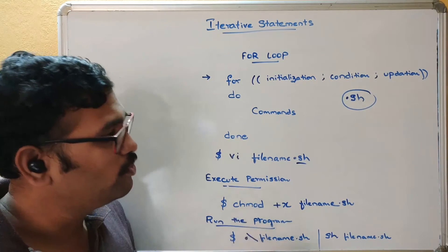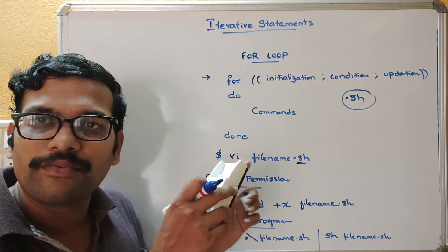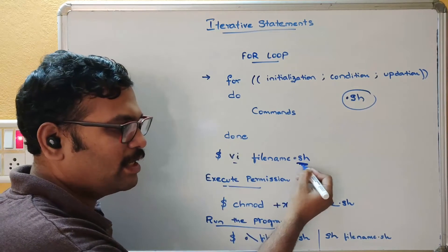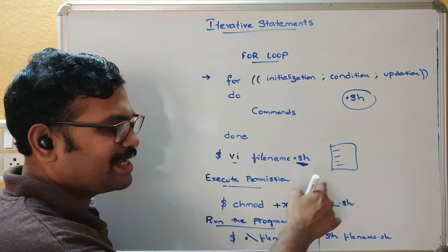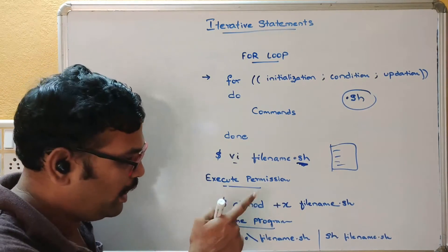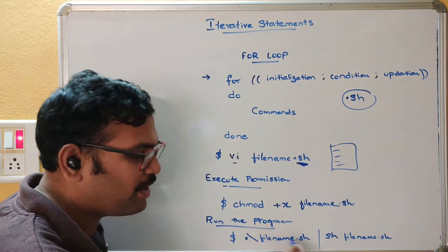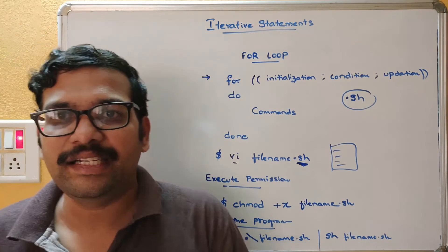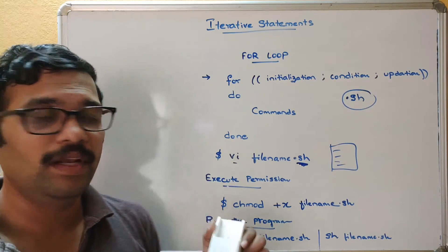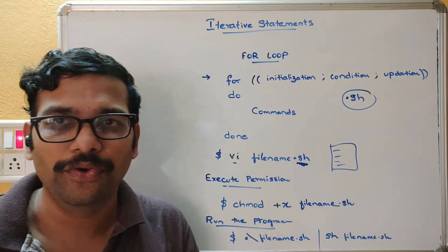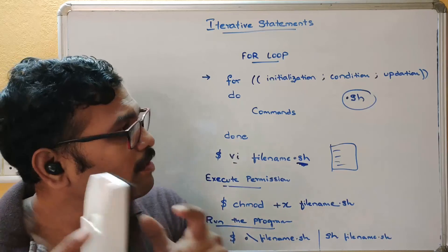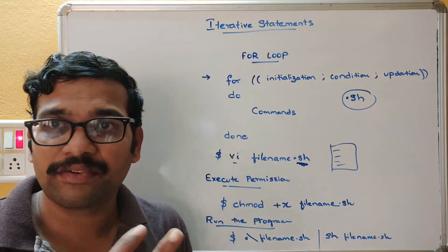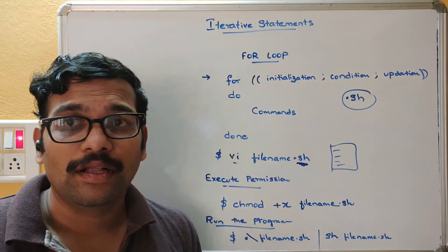Without using the '.sh' extension and without setting permissions, some syntaxes will not work. So the correct workflow is: create a file with 'vi' and '.sh' extension, write the instructions in the vi editor, save the file, give execute permissions using 'chmod', then run it with './filename.sh' or 'sh filename.sh'. I'll execute each example for all the syntaxes shown. In the next session we'll cover the while and until loops. Let's move on to the terminal.